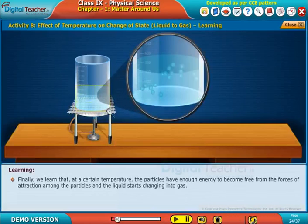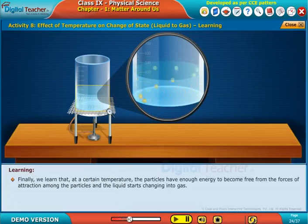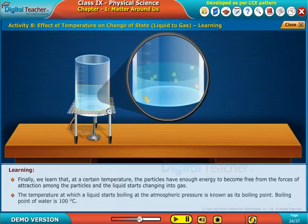Finally we learned that at a certain temperature, the particles have enough energy to become free from the forces of attraction among the particles and the liquid starts changing into gas. The temperature at which a liquid starts boiling at the atmospheric pressure is known as its boiling point. Boiling point of water is hundred degrees centigrade.